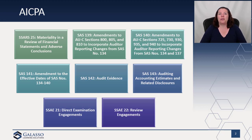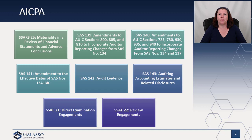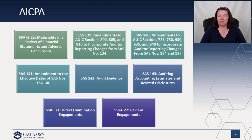SSARS 25 also now permits an adverse conclusion — stating that the financial statements are materially misstated in a review. Prior to this, that was not permitted, because you didn't have sufficient appropriate audit evidence to say so. But now if you know something is materially and pervasively misstated, you would be able to issue an adverse conclusion. In addition, it updates the report to conform with some of the SAS 134 language talking about the independence of the accountant.